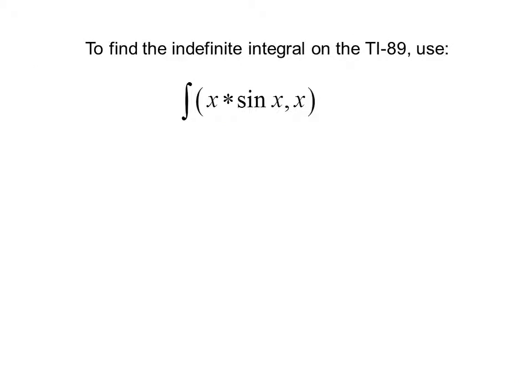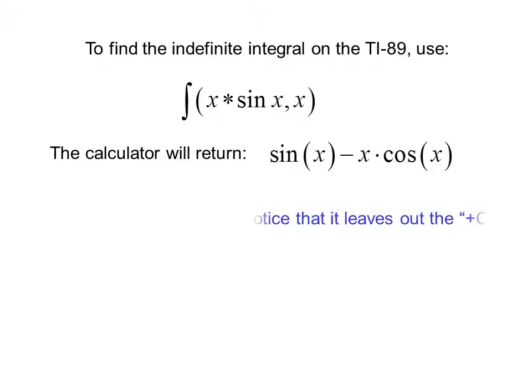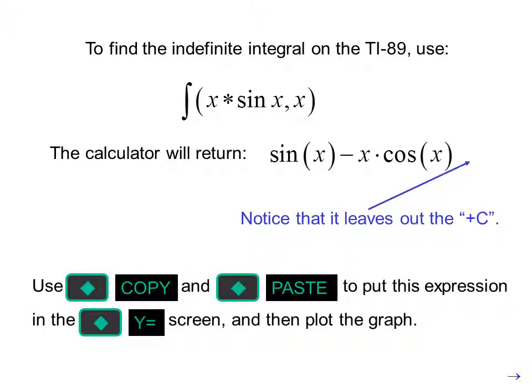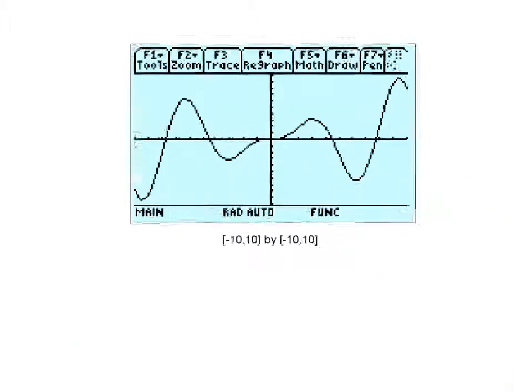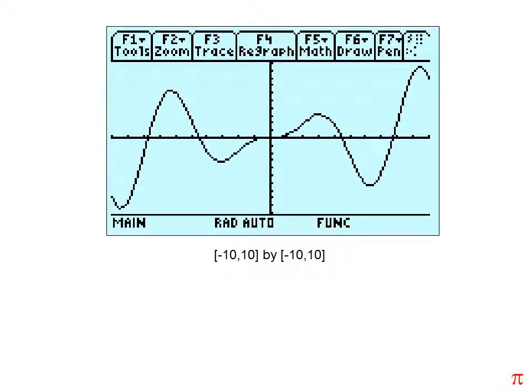To find the indefinite integral on the TI-89 use integral of x times sine x comma x. The calculator will return sine x minus x cosine x. Notice that it leaves out the plus c. Use diamond copy and diamond paste to put this expression in the diamond y equals screen and then plot the graph.